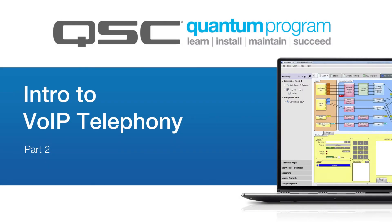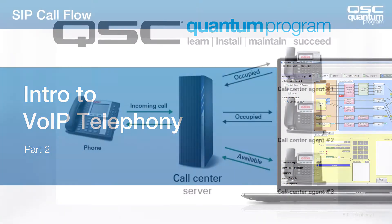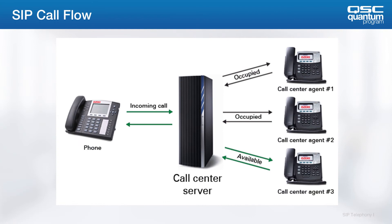Welcome back! In the previous section we showed you how to register with a server. Now it's time to make inbound and outbound calls. Here's an example of a call flow. An incoming or outgoing call is going to go to the call server, and the call server is going to send it out to the destination.